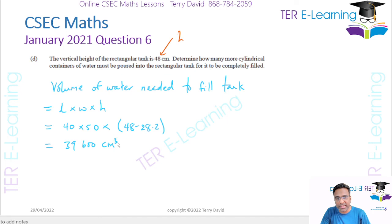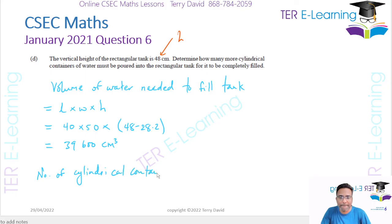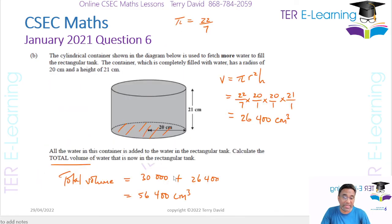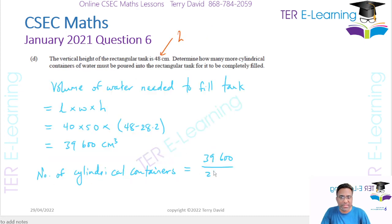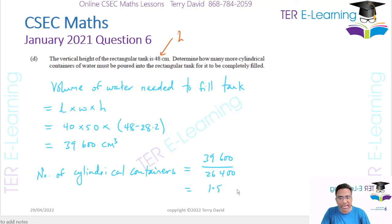Now let's read the question carefully — they asked how many more cylindrical containers are needed. The number of cylindrical containers equals the total missing volume, 39,600, divided by the volume of one cylindrical container, 26,400. That gives 1.5 — so it takes one and a half more containers to completely fill the tank.